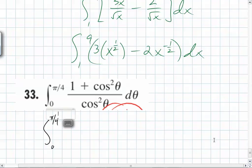How about we just do exactly what we just did? What does it turn into? What's 1 over cosine squared? Secant squared. So secant squared d theta plus 0 to pi over 4 of 1 d theta.